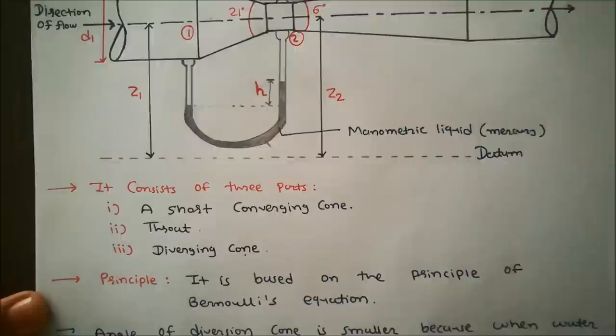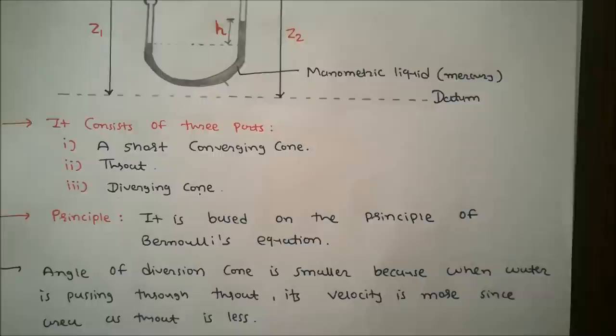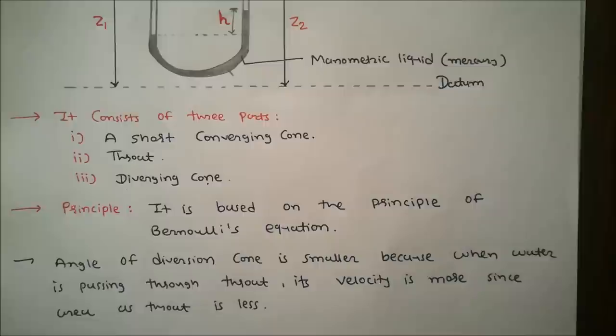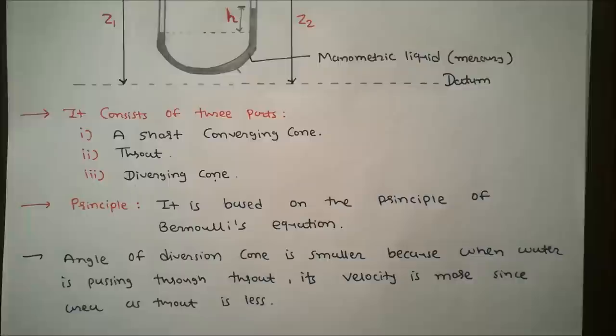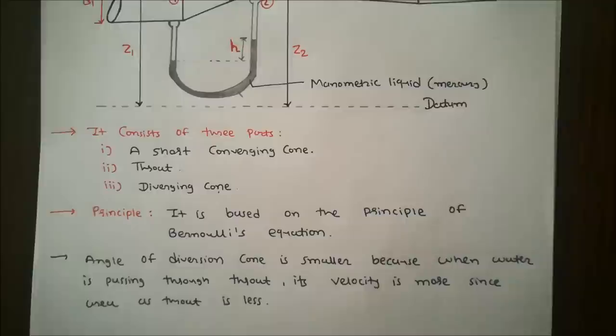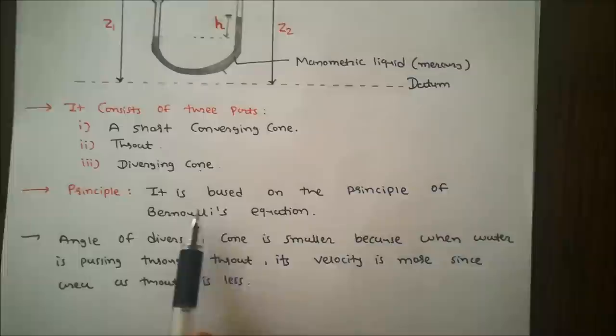The principle of Venturimeter is based on Bernoulli's equation. That is, the velocity head increases in an accelerated flow by reducing the cross-sectional area of the flow passage, due to which the pressure head reduces at that section, and a pressure difference is created which enables determination of the discharge through the pipe.